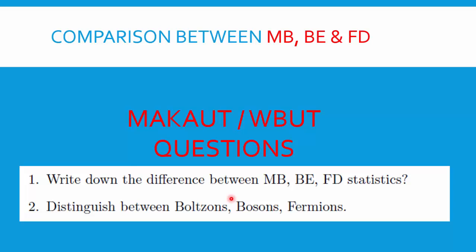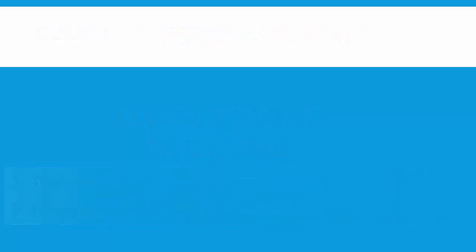The answer to 'distinguish between bosons and fermions' follows the same points: bosons are particles that follow Bose-Einstein statistics, fermions are particles that follow Fermi-Dirac statistics. So differentiating bosons and fermions is essentially the same as differentiating BE and FD statistics.